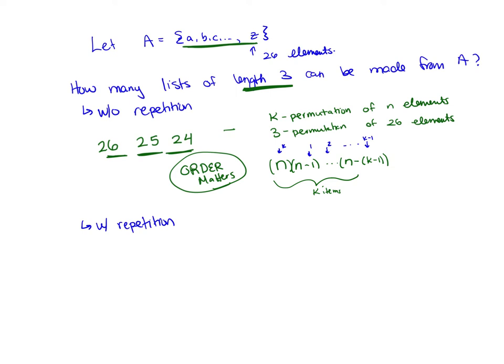Now I could write that a little bit differently because I can distribute that negative. So it's n times n minus 1 down to n minus K plus 1. So again, I still have those K items. And because this is something that comes up a lot, we're going to give this a special name. So we'll call this P(n,K).